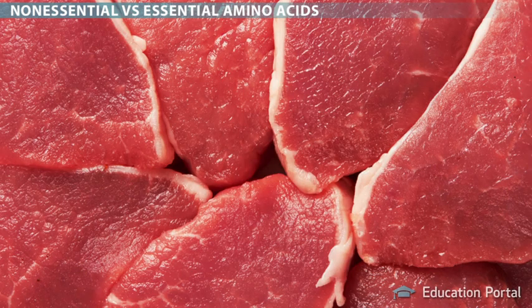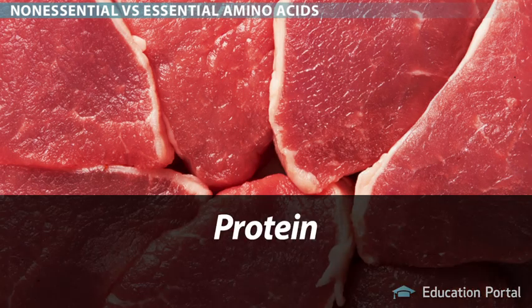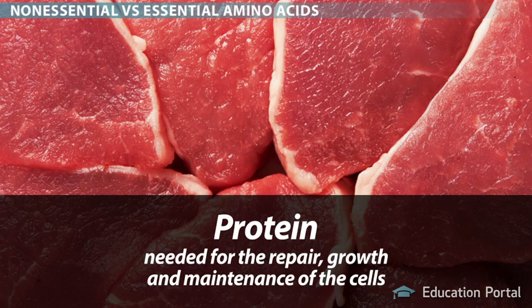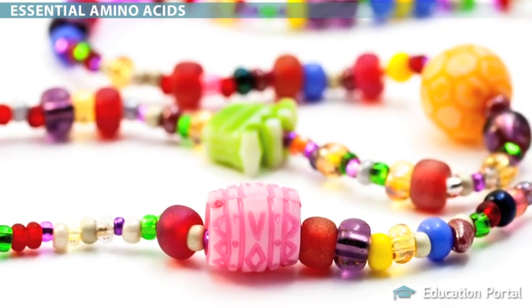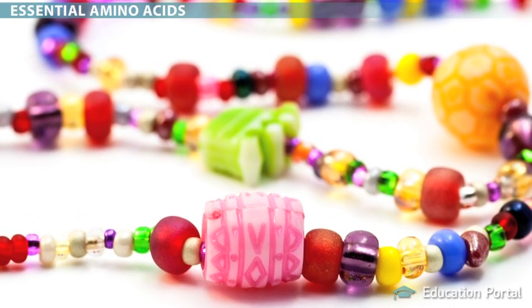If you're missing any of these amino acids, your body has a hard time making all of the protein it needs. And since protein is needed for the repair, growth, and maintenance of the cells, you can see just how important it is to obtain all the needed amino acids. Your body works like a mixer, taking 20 different amino acids and mixing and matching them together into bonded chains that vary in length and sequence, kind of like a beaded necklace with beads of all different shapes and colors.